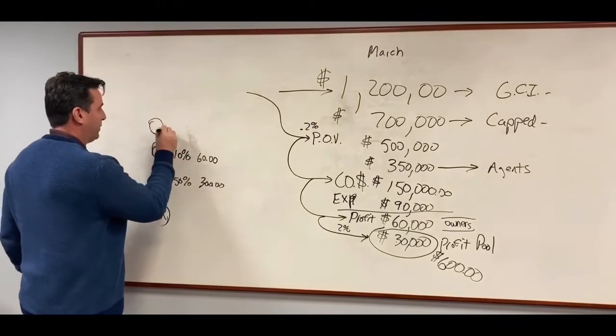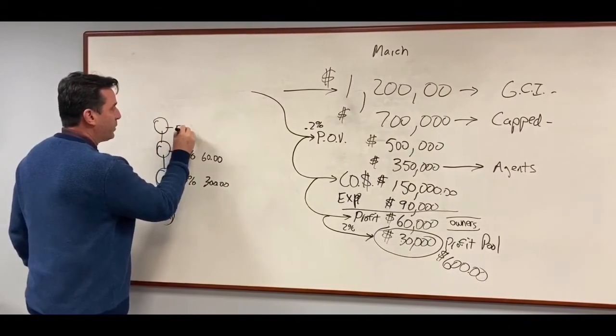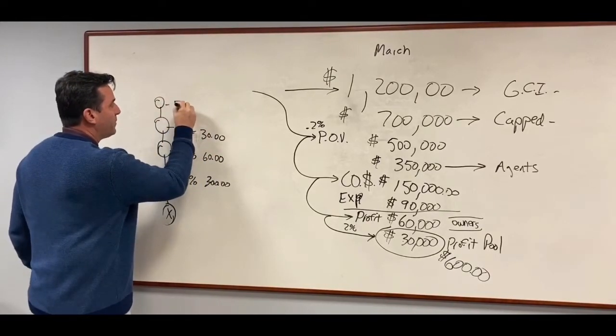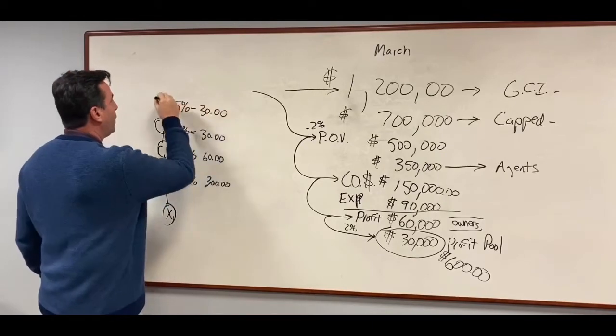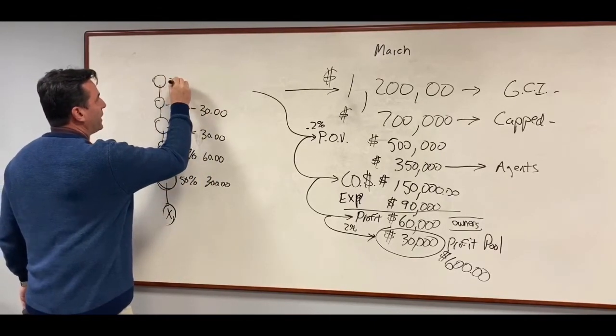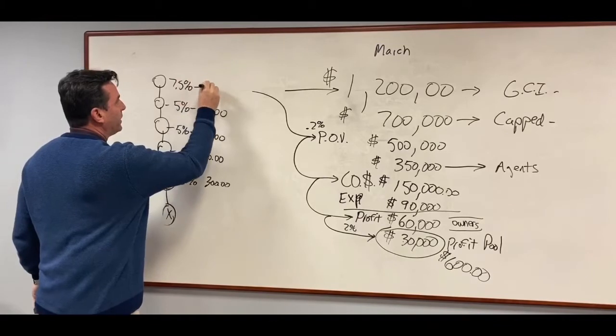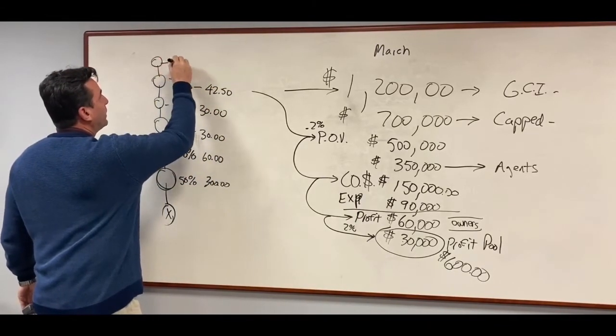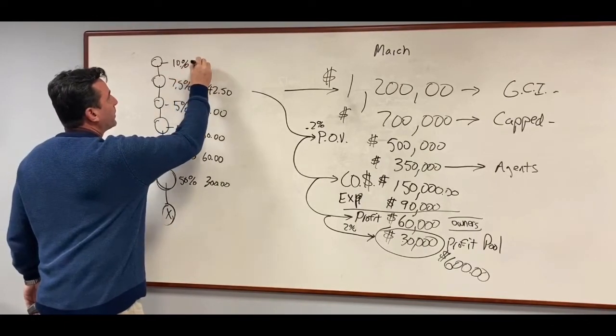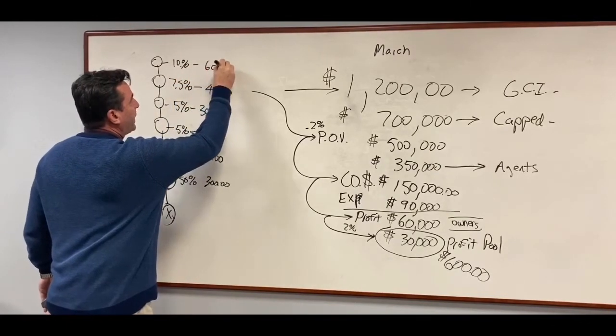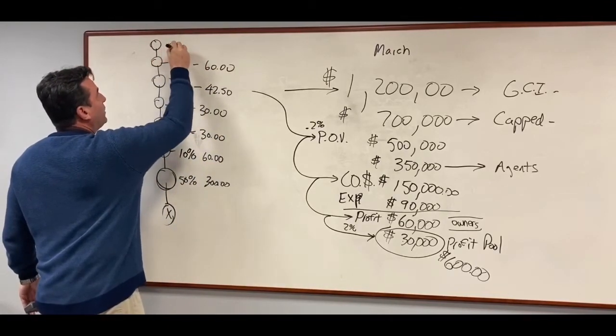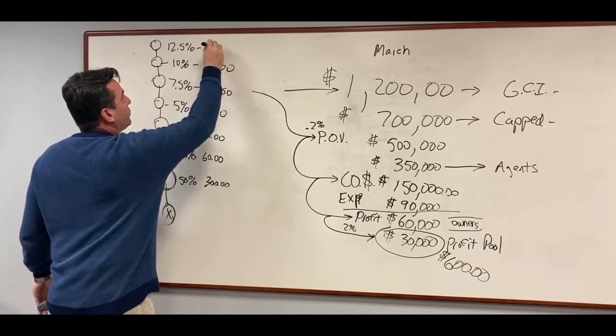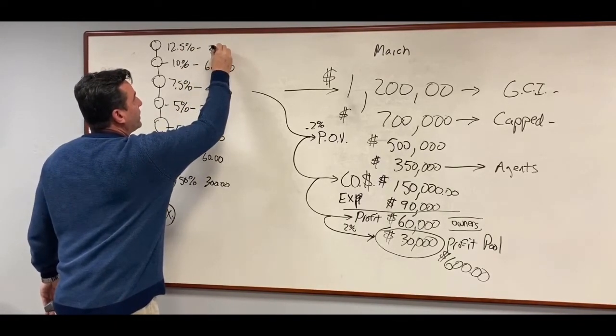But you know what? They had a sponsor, and we're going to give them 5%, which is $30. They had a sponsor. We're going to give them 5%. You know what? That agent had a sponsor, and they're going to get 7.5%. And they had a sponsor, and they also had a sponsor, who's going to earn 12.5%, which is going to be $72.50. Okay?